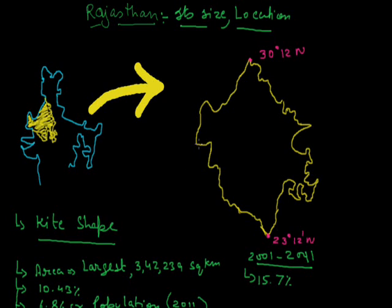On the other hand, the longitudinal extent of Rajasthan is from 69 degree 30 minute east to 78 degree 17 minute east. This is the longitudinal extent of Rajasthan.